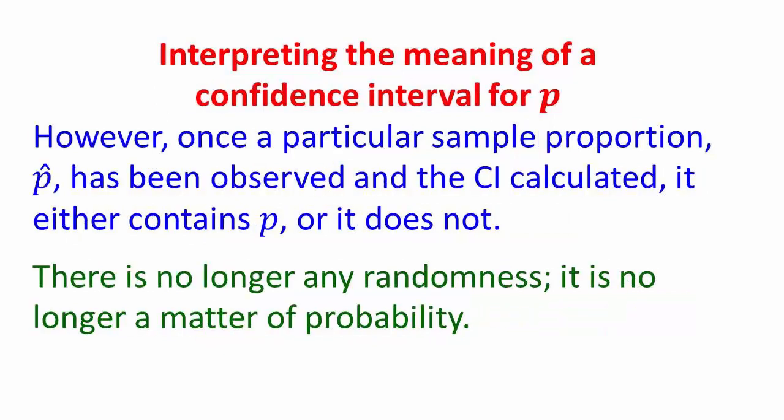However, as we saw in the simulation, once a particular sample proportion p-hat has been observed and its confidence interval calculated, it either contains p or it doesn't. Once it has been calculated, once it's there in front of you, there's no longer any randomness. It's no longer a question of probability.